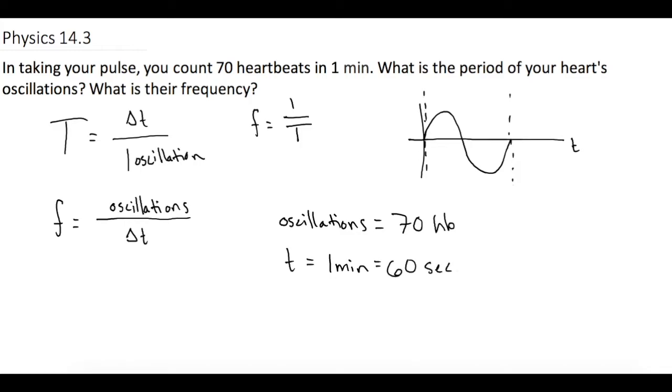So now that we have both of these, we can plug them in. So for T, or our period, we have a change of time of 60 seconds over the number of oscillations, in this case 70 heartbeats. And that gives us 0.857 seconds per one heartbeat.